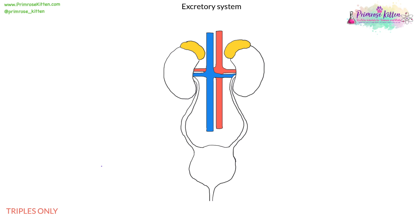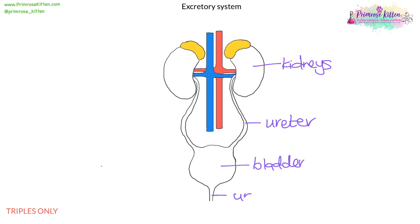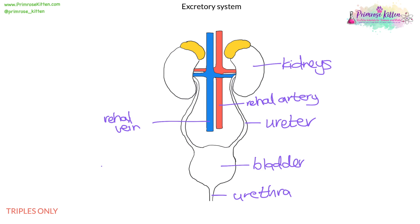The excretory system is made up of a number of different organs: the kidneys, the bladder, the ureter, and the urethra. The kidney is fed by the renal artery, and blood is removed by the renal vein. Above the kidneys you'll see the adrenal glands — those are the adrenal glands.